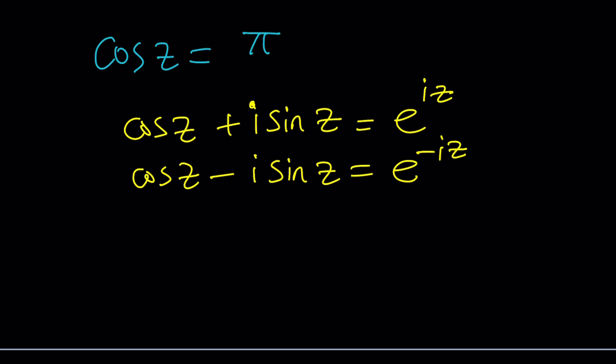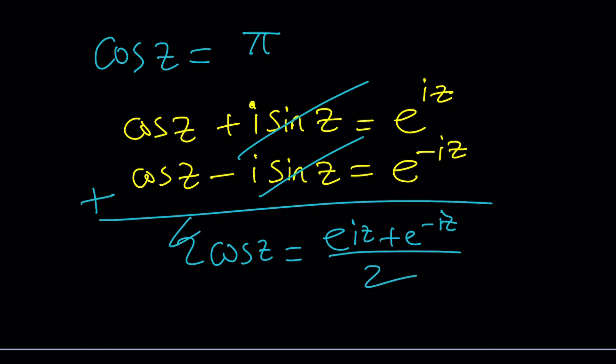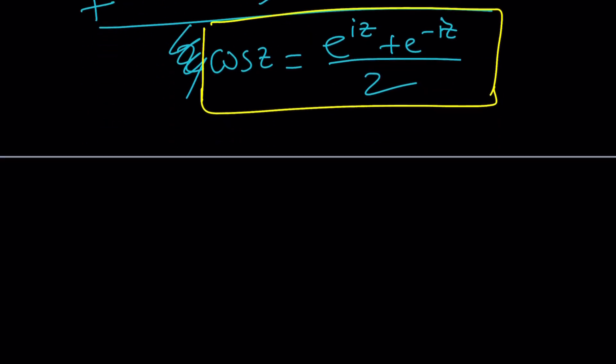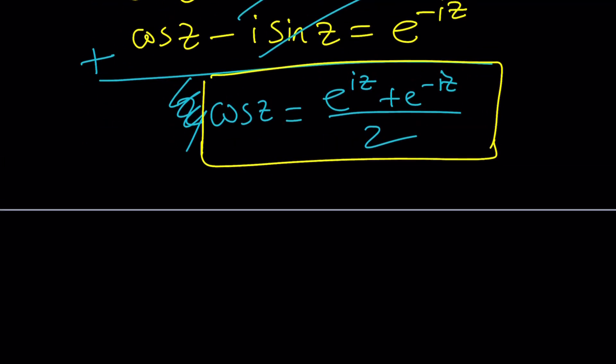So from here, we can go ahead and add these equations up, cancel these out. Two cosine z equals e to the i z plus e to the negative i z. Divide both sides by two, and you're good to go. This is a well-known formula, but I just wanted to show you real quick where that comes from. I think this formula will be helpful. By the way, if you understand where that comes from, you're more likely to remember it because sometimes you memorize and you forget, and you learn and you'll remember.